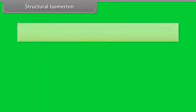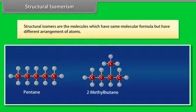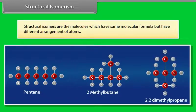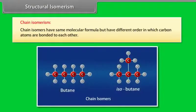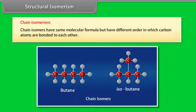Structural isomers are molecules which have the same molecular formula but have different arrangement of atoms. Chain isomers have same molecular formula but have different order in which carbon atoms are bonded to each other.